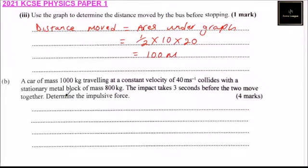Part B, we are told a car of mass a thousand kg traveling at a constant velocity of 40 meters per second collide with a stationary metal block of mass 800 kg. The impact takes three seconds before the two move together. Determine the impulse.